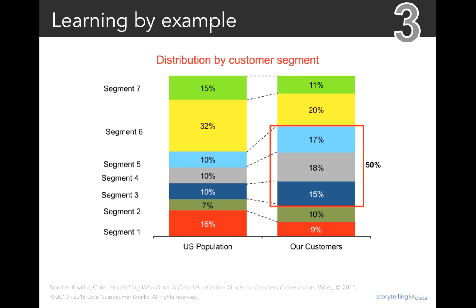Here we're back working at the US retailer from our first example. In this case, we're looking at the distribution of our customers across a number of segments compared to the US population. I want you to look at this for a moment and figure out where you're supposed to look. We have some cues saying 'this is important, look here' — somebody drew a red box on the right-hand side and labeled the sum of the segments in the red box as 50%. The problem is, there are so many other things competing for our attention — colors and lines and dashes — that it can take a while to even see that's where we're meant to look, and we may focus somewhere else entirely first.